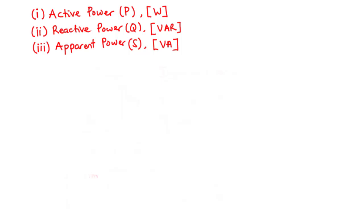There are three kinds of power in an AC circuit. We have the active power, which is represented by the capital letter P and measured in watts. We also have the reactive power, represented by the capital letter Q, and measured in volt-amperes reactive. And then lastly, we have the apparent power, represented by the capital letter S, and measured in volt-amperes.